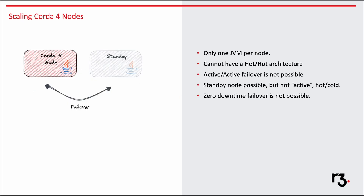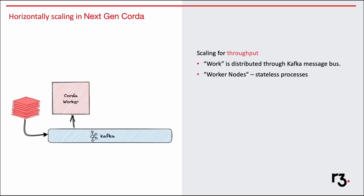Since one node is one JVM, we cannot have an active failover. We cannot have a hot-hot architecture because of technical reasons. The best possible availability scenario is hot-cold, that is, an active standby scenario. The failover will incur some downtime.